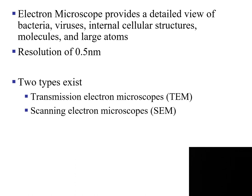The electron microscope provides a detailed view of bacteria, viruses, internal cellular structures, molecules, and large atoms. It has a resolving power of 0.5 nanometers. There are two types of electron microscopes we will discuss: the first is the transmission electron microscope (TEM), and the other is the scanning electron microscope (SEM).